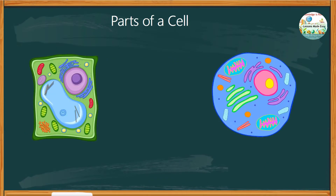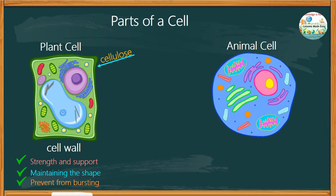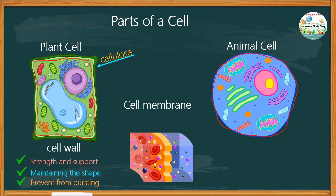Study the images below — here you have a plant cell and an animal cell. Do you notice the difference in shape? A plant cell has a cell wall but an animal cell doesn't. The cell wall is the tough outer layer of the cell which contains cellulose. It provides strength and support to the plant, maintaining its shape and preventing it from bursting in a hypotonic environment — when the solute concentration outside the cell is less than the inside. Both a plant cell and an animal cell have a cell membrane, which acts as a barrier controlling the movement of substances in and out of the cell.